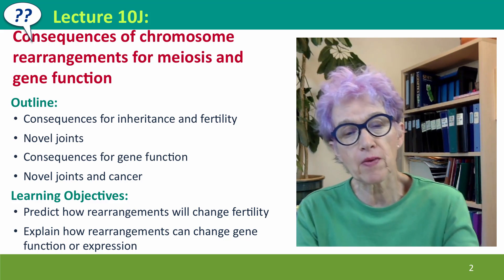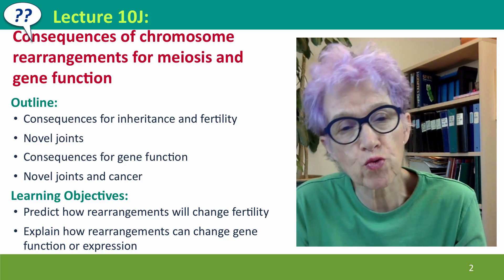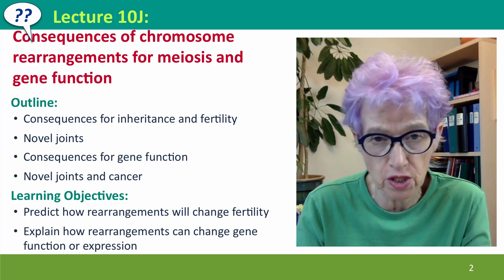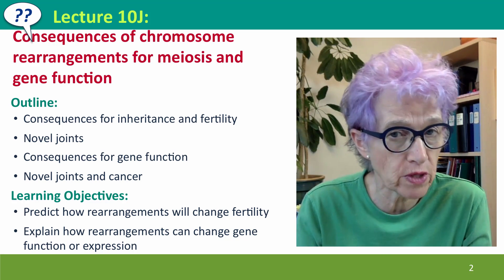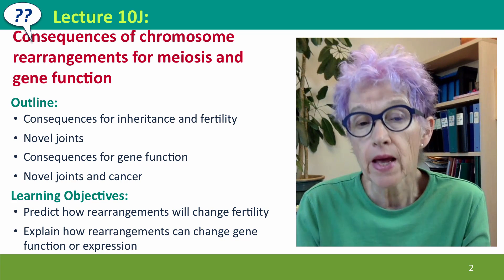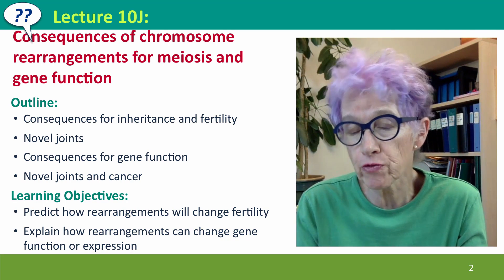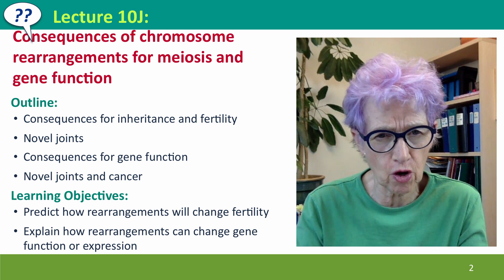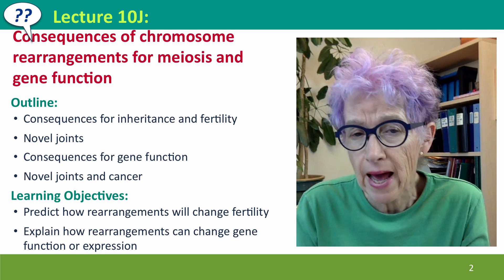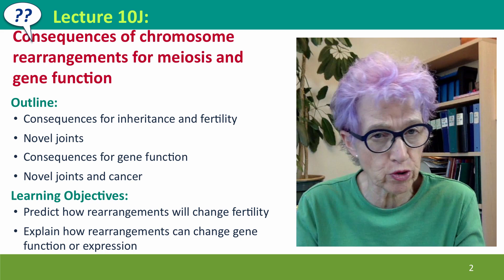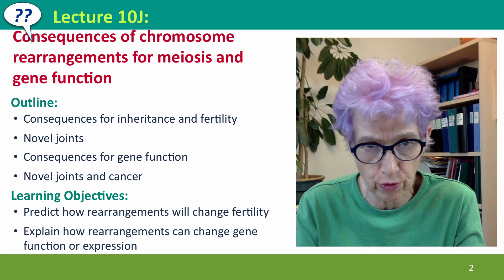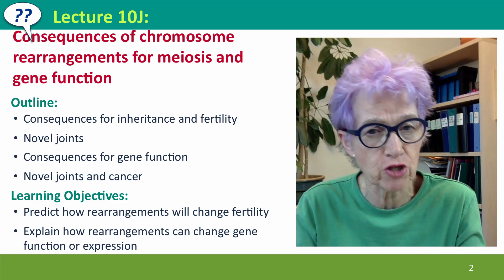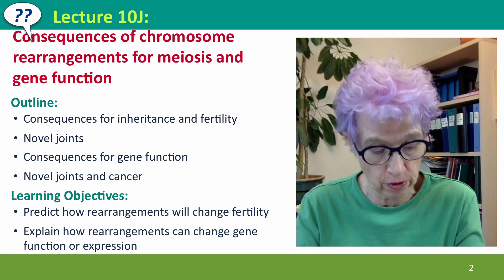We'll talk about how rearranged chromosomes can pair or not pair in meiosis and the consequences for fertility. Then we'll talk about the novel joints — the new DNA sequence combinations that are created at the points where chromosomes are broken and rejoined incorrectly — and the consequences for gene function and for cancer.